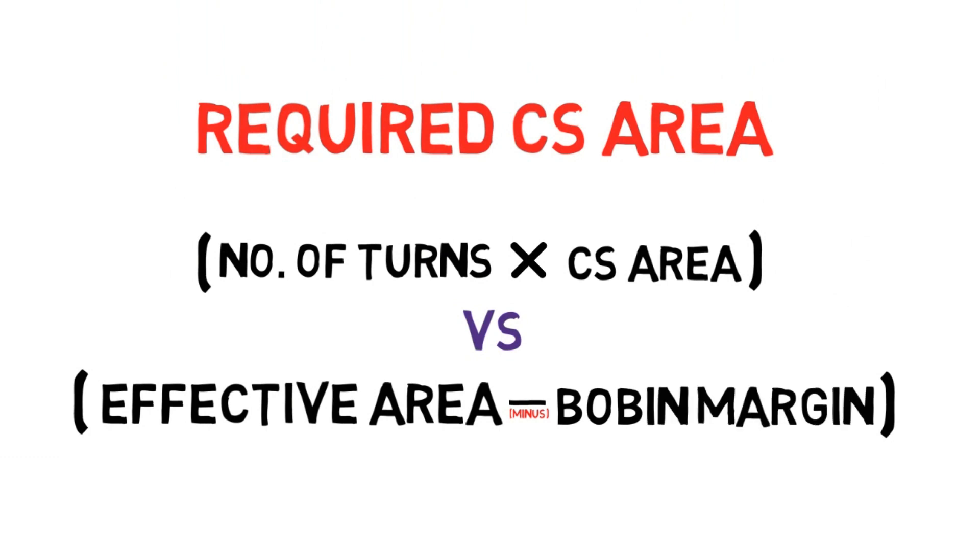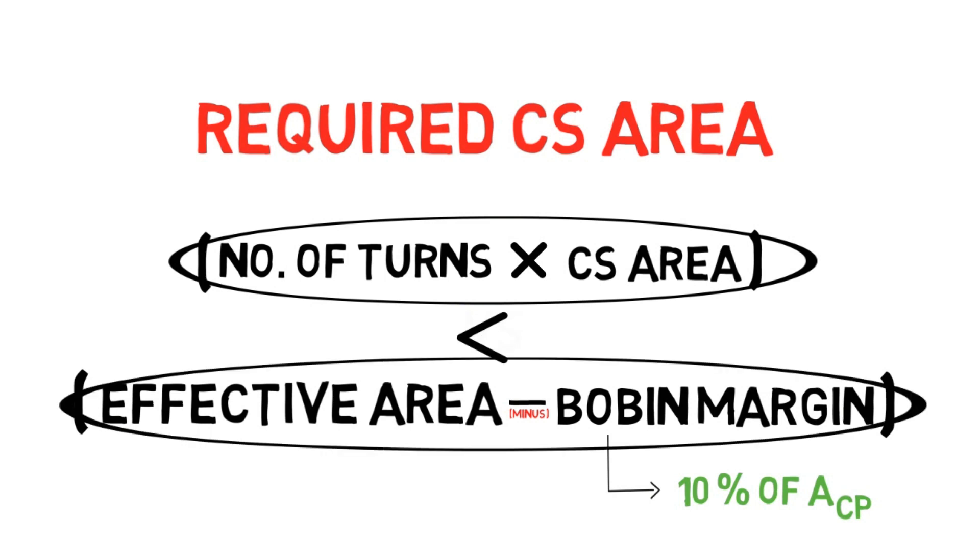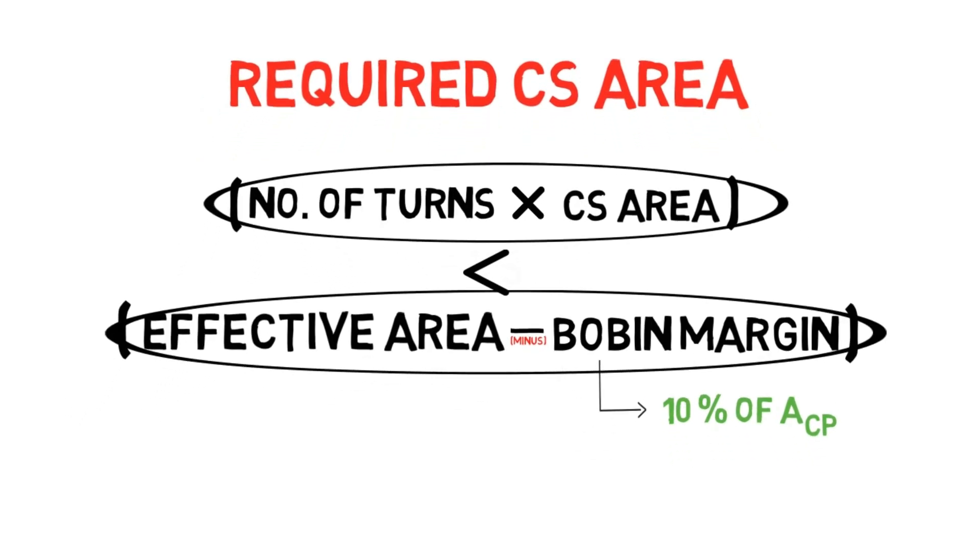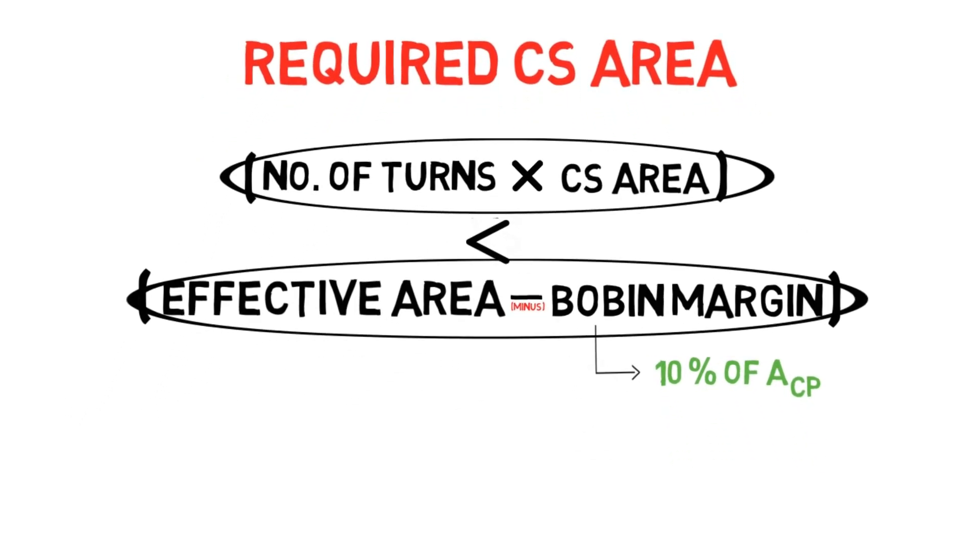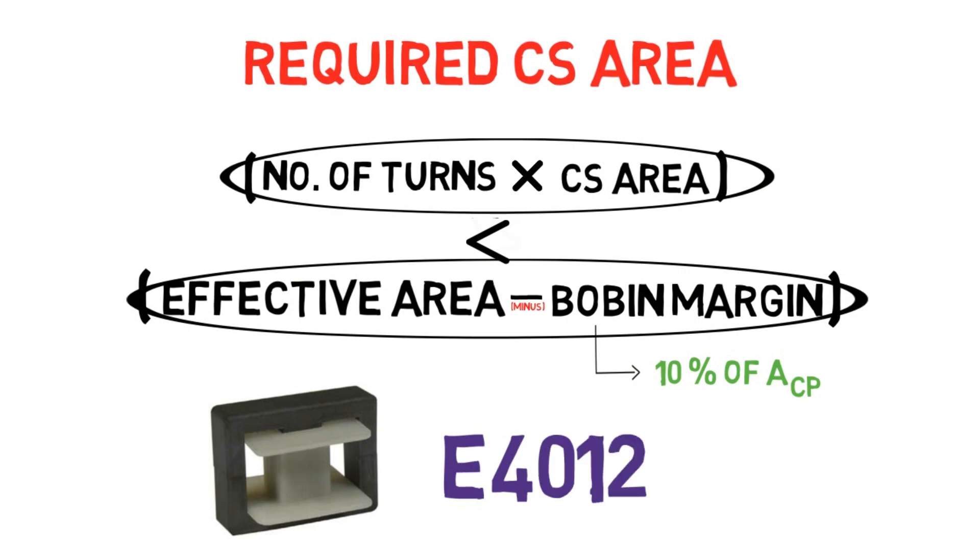Bobbin margin, considering it as 10% of effective area. If this value is less than the supposed value then we can assume that wire will fit into bobbin. Hence if we solve this equation then we will find out that the required wire will fit into this E4012 core and we don't need bigger core than that. If we would have selected E4215 core, in that case it would have been wastage of space.